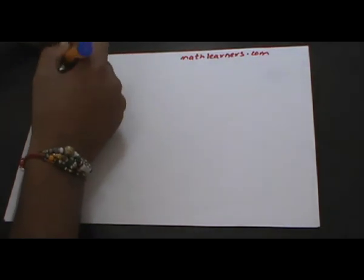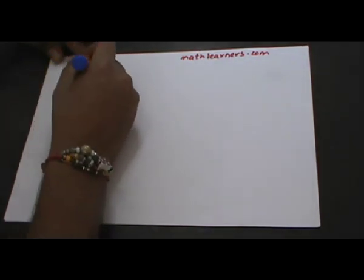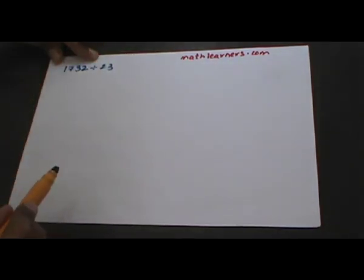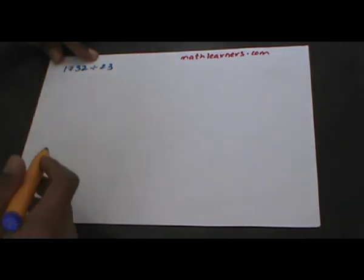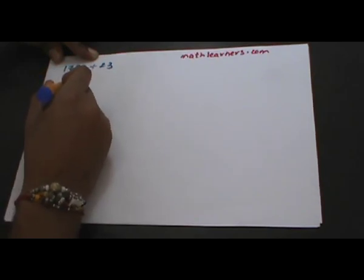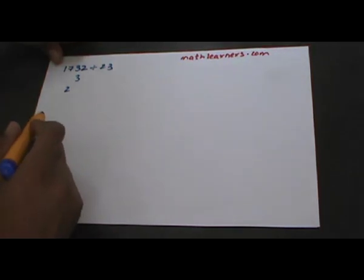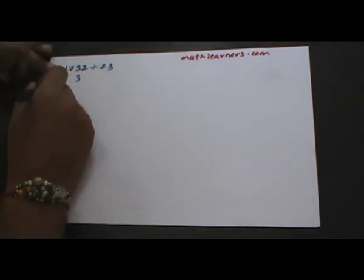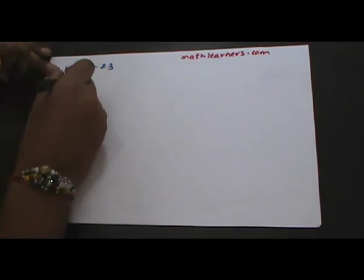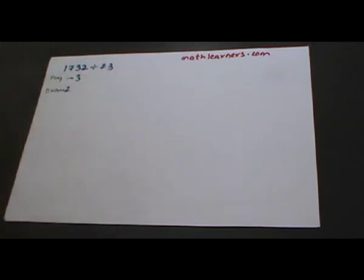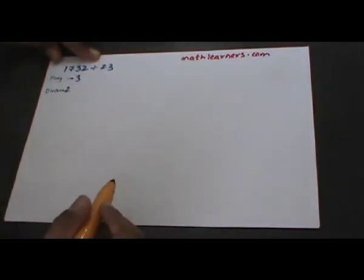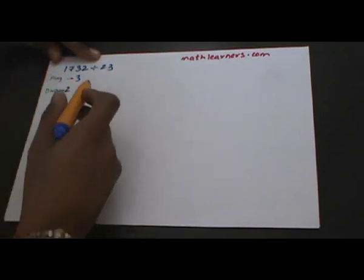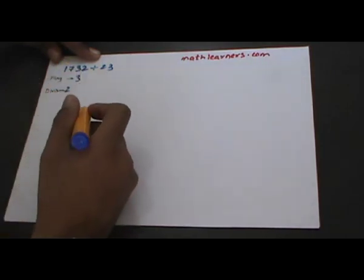Let's say suppose we want to divide 1732 by 23. Here the dividend is 1732 and the divisor is 23. As per the flag method we need to split this divisor into two parts — 2 and 3 — such that 2 will act as our divisor and 3 will be our flag. We split the dividend into two parts: quotient and remainder, such that the remainder part will have exactly the same number of digits as the flag. As the flag has one digit, the remainder will have one digit, that is 2.